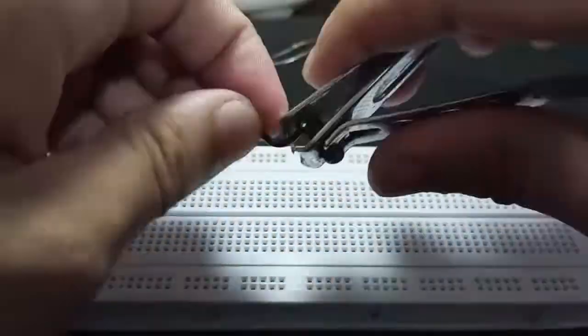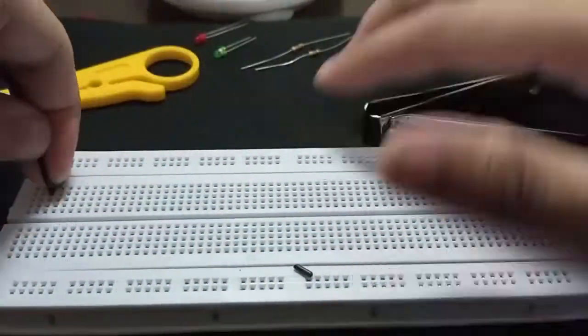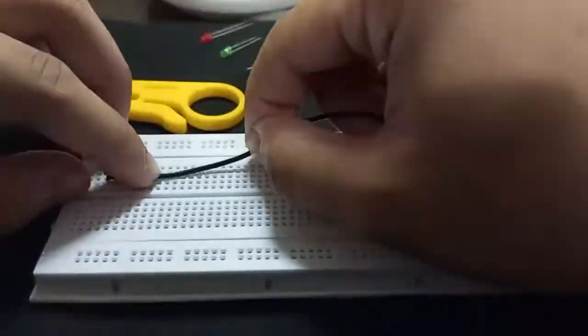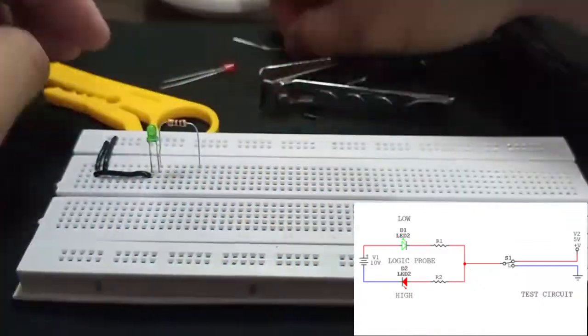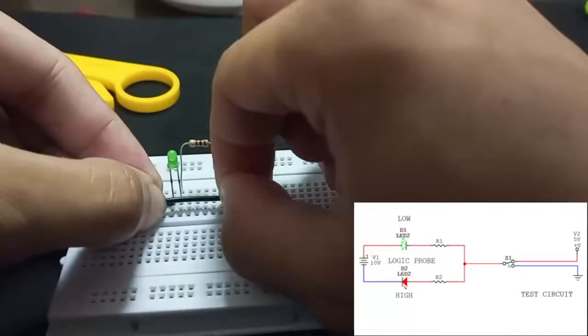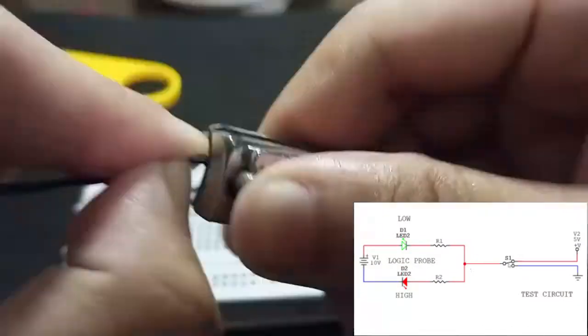First, we need to make the positive and negative power rails jump into the terminal strips of the breadboard. From here, all we have to do is follow the schematics we made in the simulation. As shown in the schematic, the tip of the probe will lie between the two resistors.